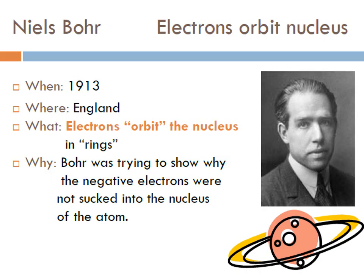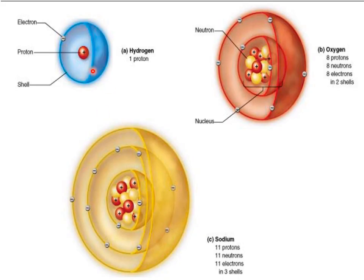Next up is Niels Bohr in 1913 in England. He thought that electrons orbit the nucleus in rings, almost like the way planets orbit the sun. Bohr was trying to explain why the negative electrons were not sucked into the positive nucleus, and he used the spectral lines of hydrogen to figure this out. We have three examples — hydrogen, oxygen, and sodium — showing the positive nucleus in the center surrounded by rings of electrons. Draw oxygen, the red one in the upper right-hand corner, into your atomic timeline and label your picture.